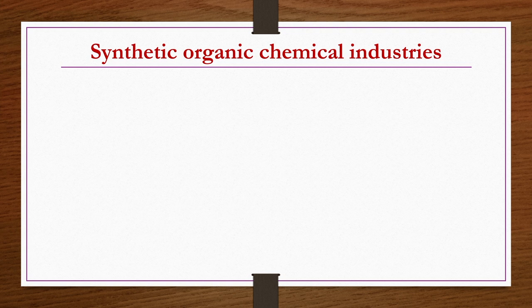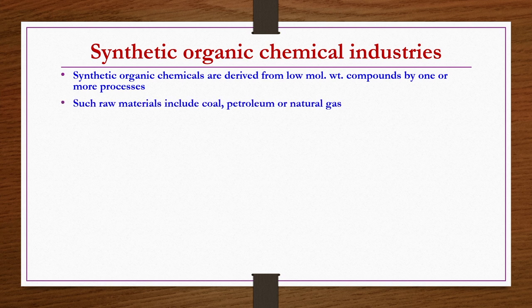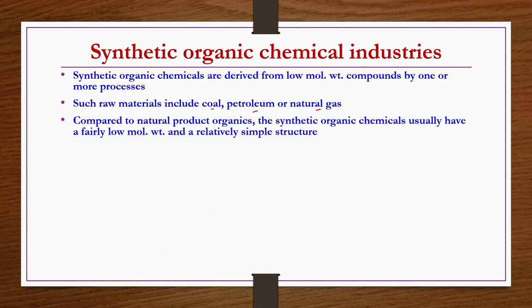Synthetic organic chemical industries: synthetic organic chemicals are derived from low molecular weight compounds by one or more processes. The raw materials include coal, petroleum, and natural gas. Compared to natural product organics, synthetic organic chemicals usually have a fairly low molecular weight as well as a relatively simple structure.